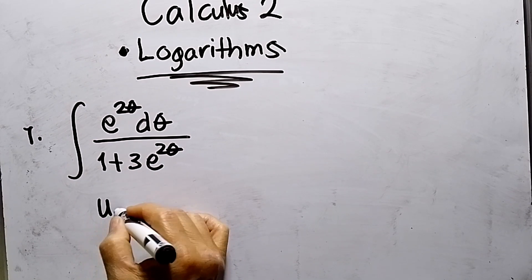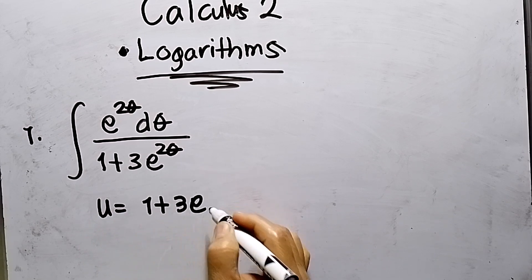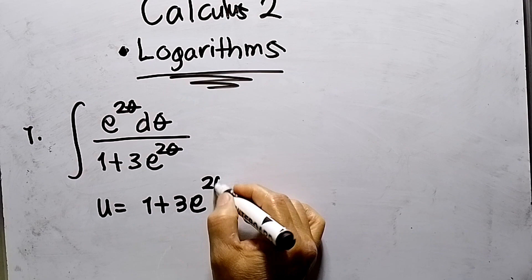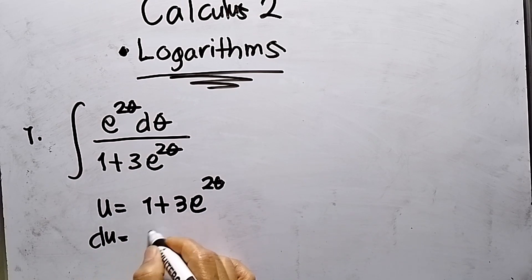I need to assume let u will be 1 plus 3e raised to the 2θ. So the derivative, du, 0 plus...